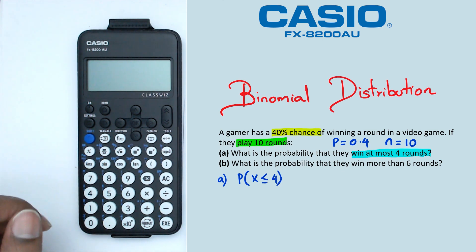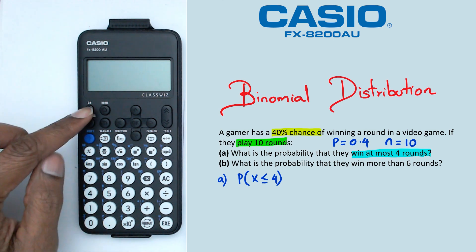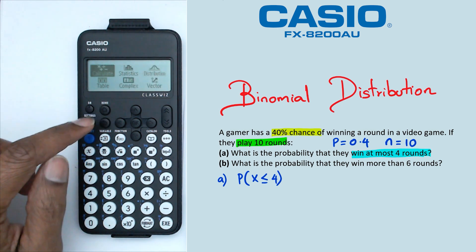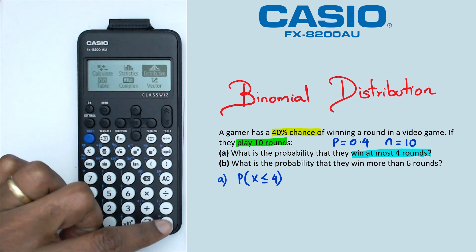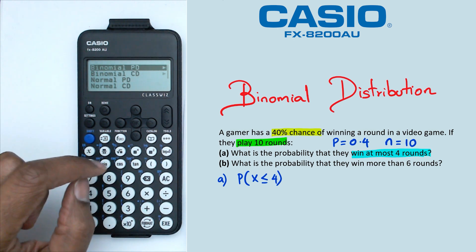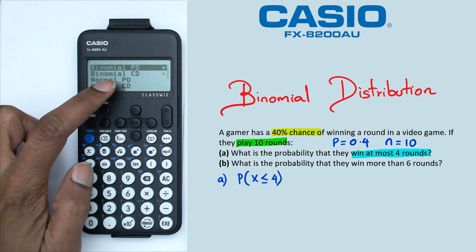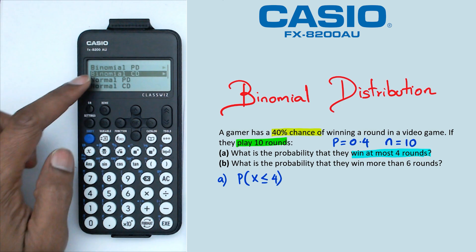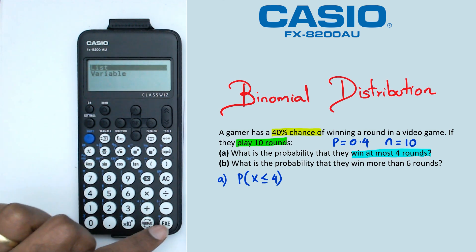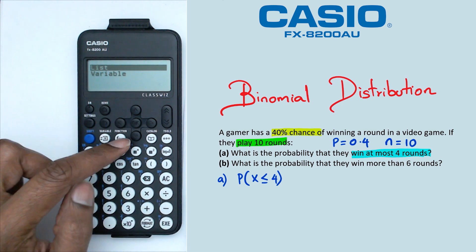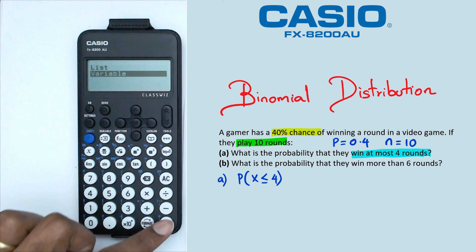Now to do this on this particular calculator, what we want to do is switch on the calculator, click the home button, go into distributions. Now because we are looking for less than or equal to 4, we're going to use the binomialcd function. So we're going to go down to binomialcd, we're going to click enter or exe, go down to variable, exe.